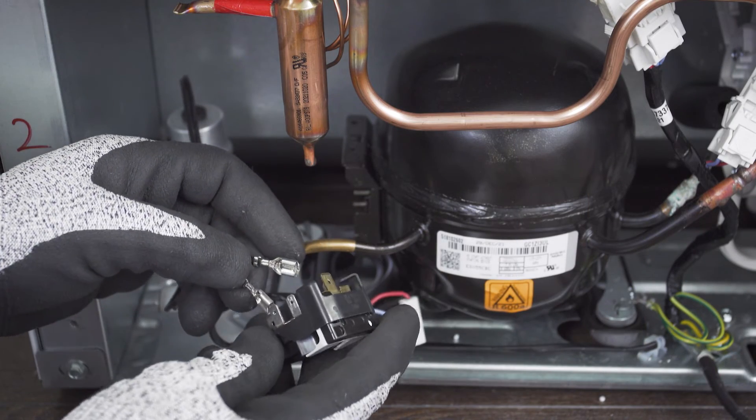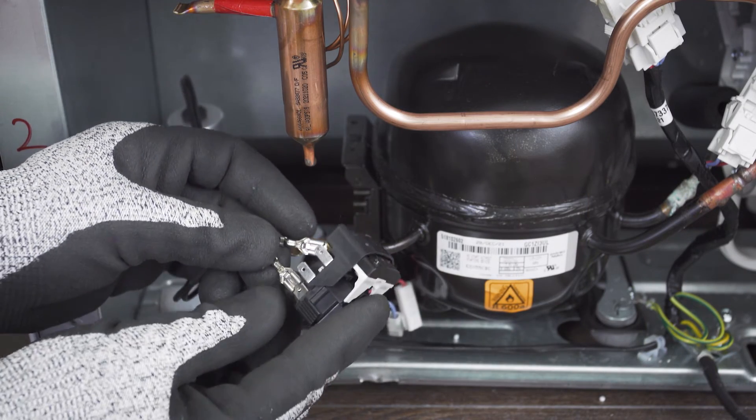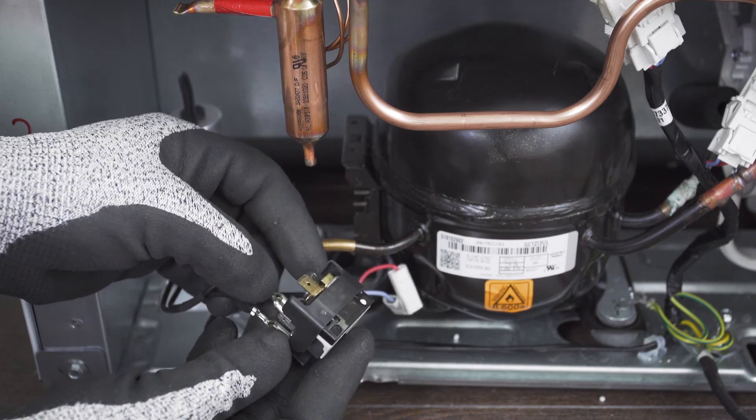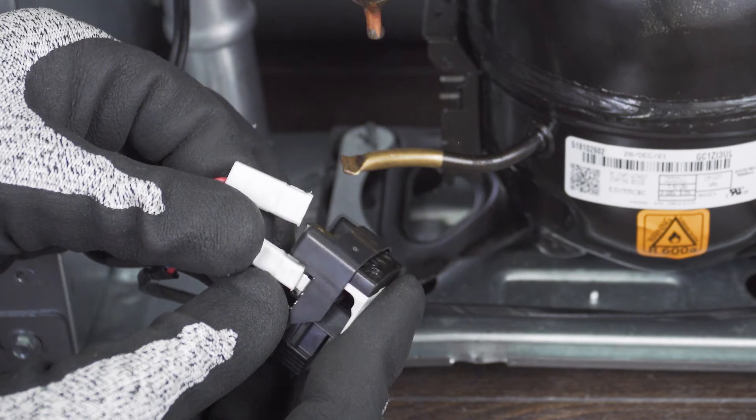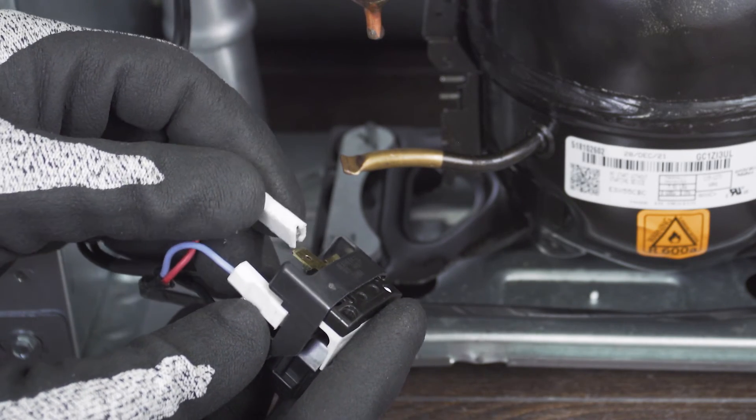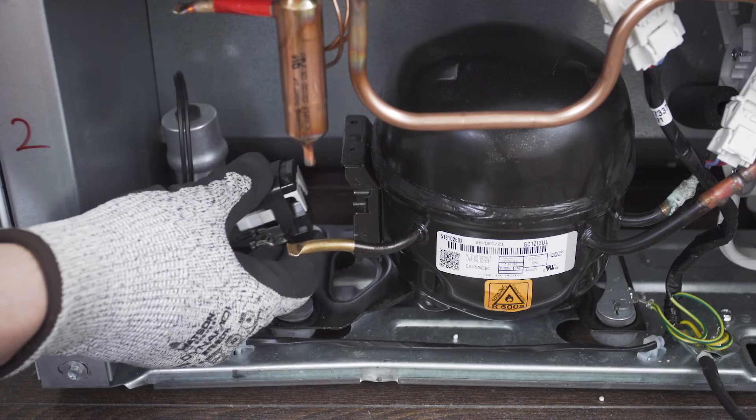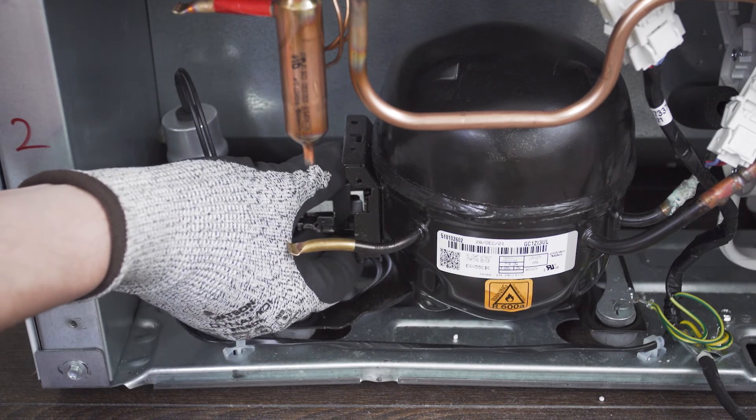If your capacitor is separate from the start relay then connect it to the two terminals. Now reconnect the wires. If needed align the relay and overload protector.